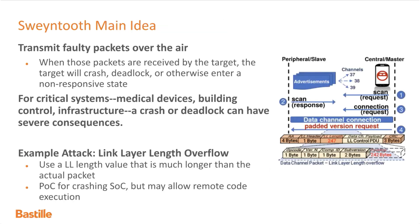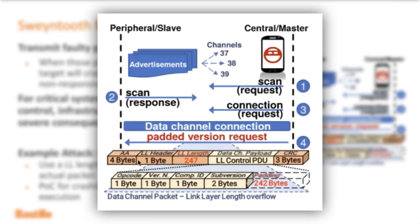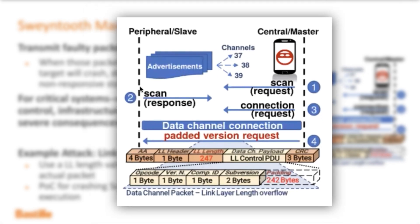The gist of all the attacks is you're transmitting faulty packets over the air, and when the target system receives those packets and tries to parse them with the code on the system on chip, it ends up crashing or locking up the device. One example attack from their paper in this plot here is changing the link layer length field. Even though the link layer is only five bytes, they indicated it was going to be 247 bytes, and that leaves this big padding where there's extra data, which basically confuses the parsing logic in certain SOCs and causes them to crash.